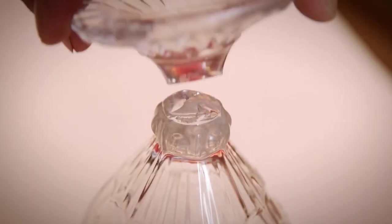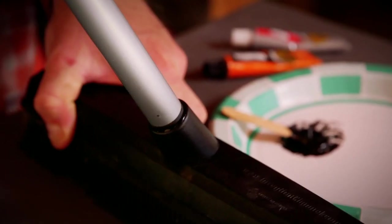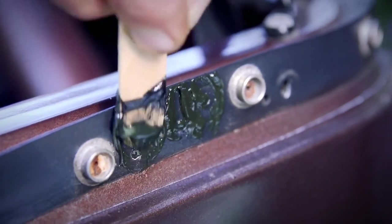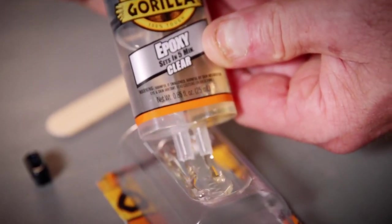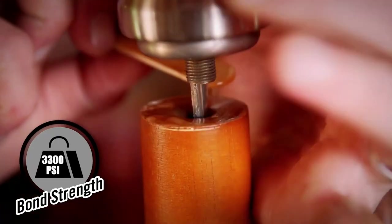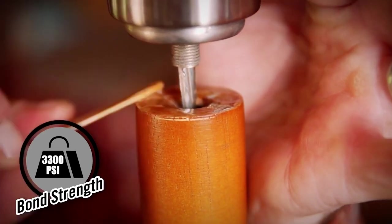Hi, I'm Kevin from Gorilla Glue, and today I'm going to show you how to use Gorilla Epoxy. Gorilla Epoxies are extremely strong two-part adhesives that are great for your tough projects. The formulas are made up of two parts, a resin and a hardener, that when combined create a heavy-duty bond.